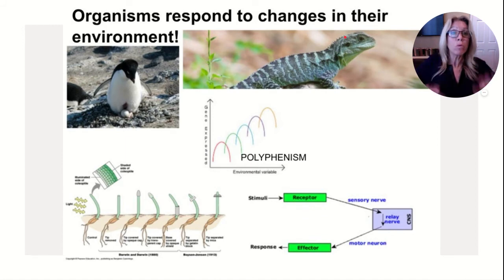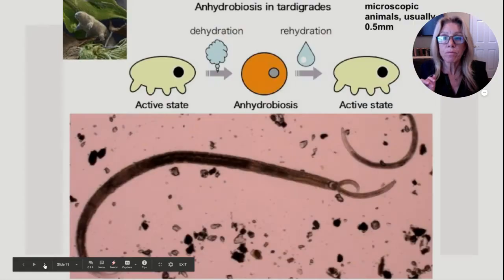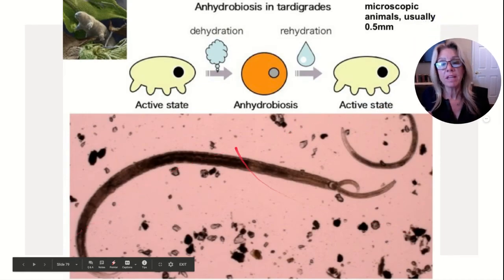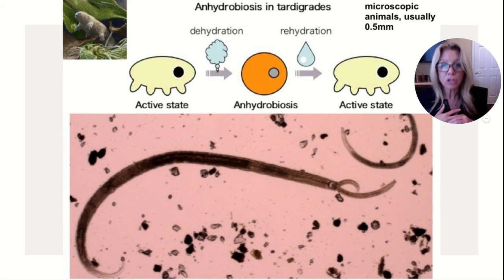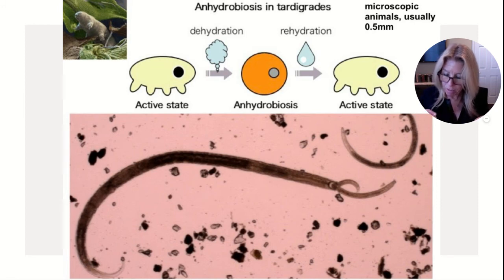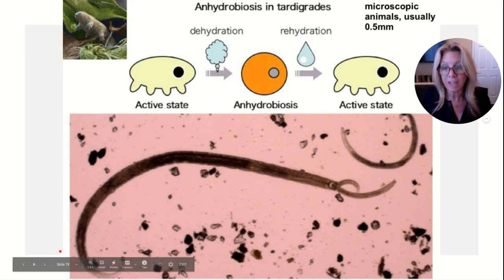Organisms respond to changes in their environment in various ways — behavioral mechanisms to warm up, or turning toward the sun. Plants grow toward light (phototropism). Our nervous system takes in stimuli and responds with behavior. Anhydrobiosis is a dormant state induced by drought, in which an organism becomes almost completely dehydrated and reduces its metabolic activity to an imperceptible level. It occurs in small invertebrates such as tardigrades (water bears) and some plant seeds.